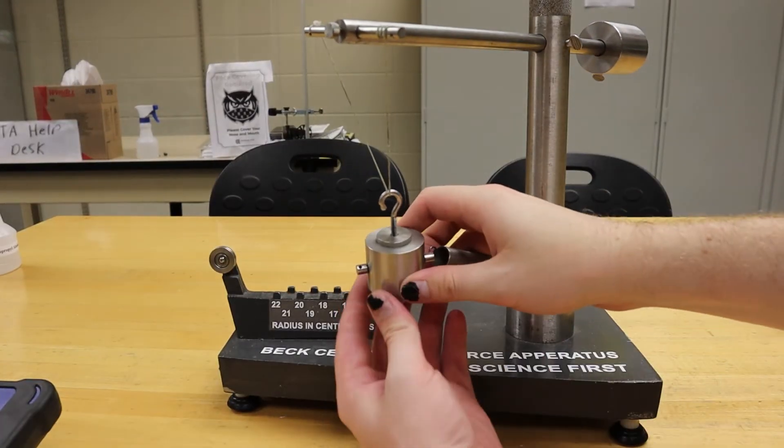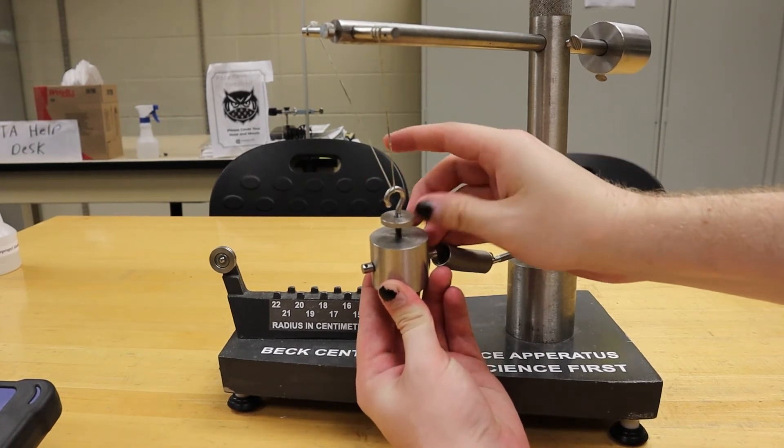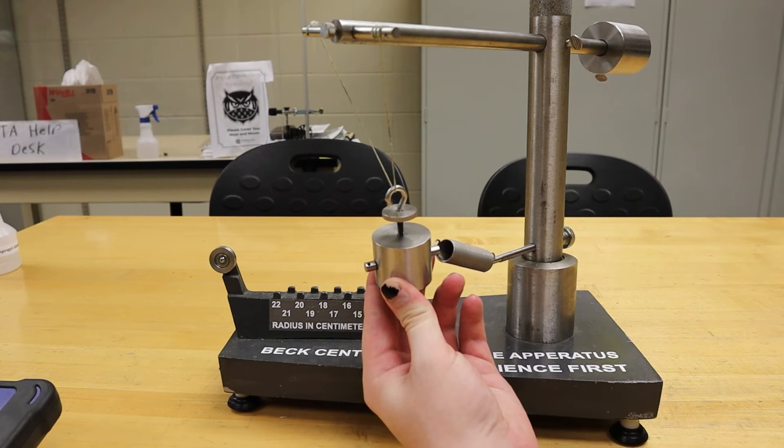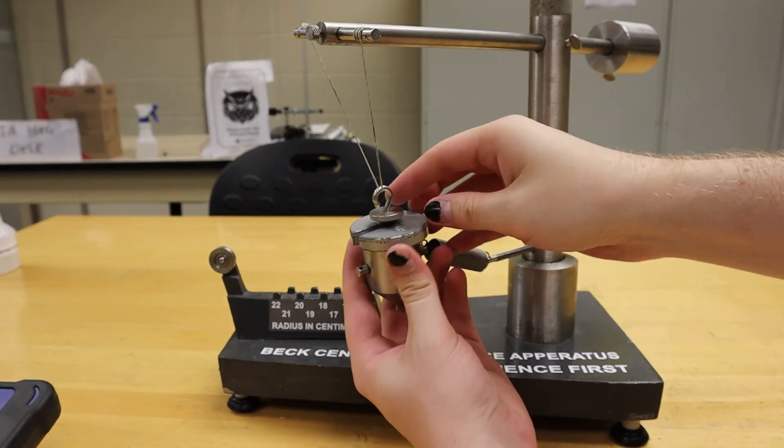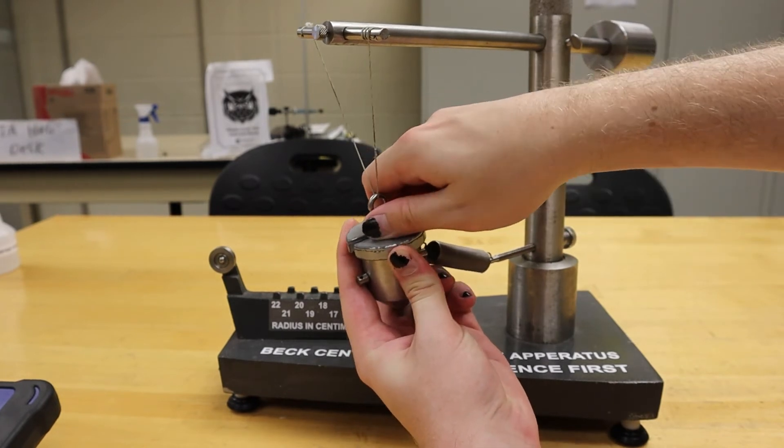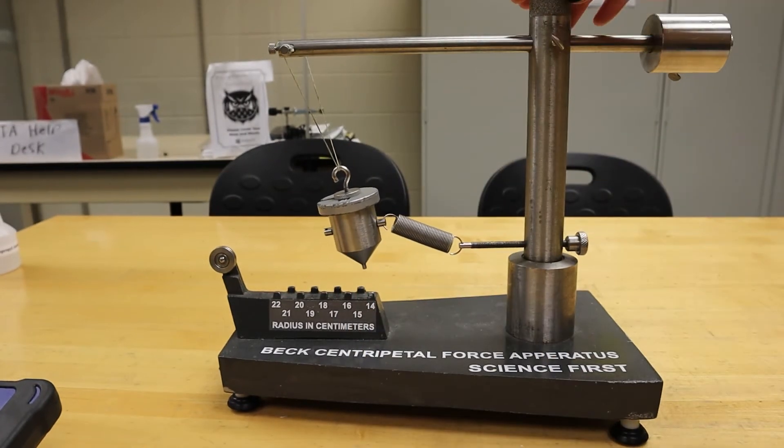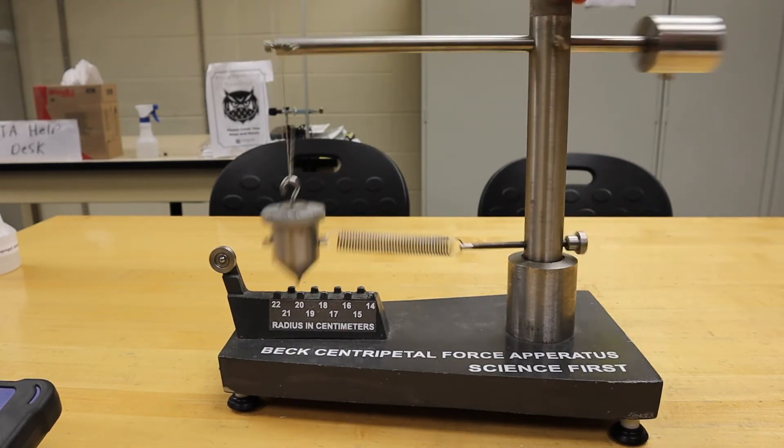We are now ready to adjust the mass of the bob. To do this, we will loosen the washer that's located on the top of the bob and slide in a mass of your choice. Make sure to tighten down the washer so your mass does not slip out. We will then repeat the process of obtaining the amount of time it takes for 30 rotations.